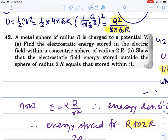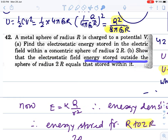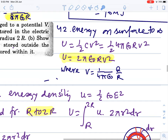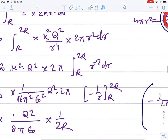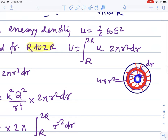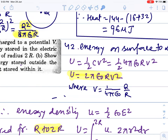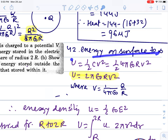That's a direct question. Now we will see the next question. Metal sphere of radius R is charged to the potential V. Find the electrostatic energy stored in the electric field within the concentric sphere of radius 2R.